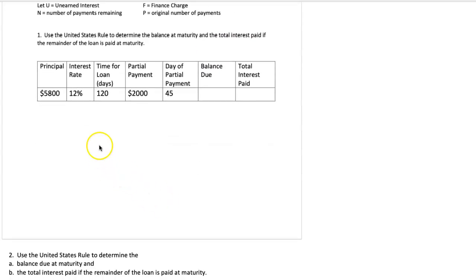Use the United States rule. Remember the United States rule says pay interest first and then you can reduce the loan balance. So we're going to start here with just I equals PRT and we're going to calculate using our principal of $5,800, our rate of 12%, and then we're going to take a partial payment on day 45.